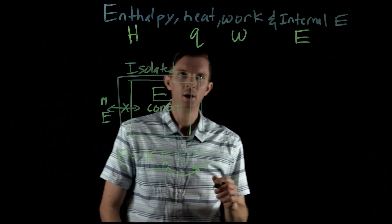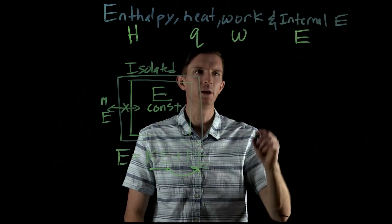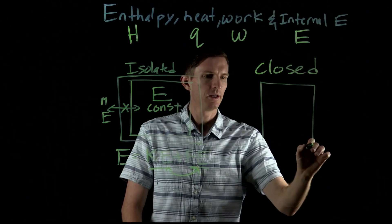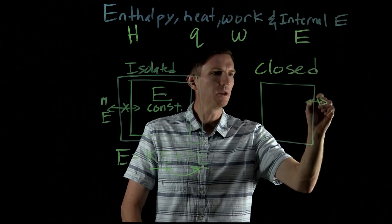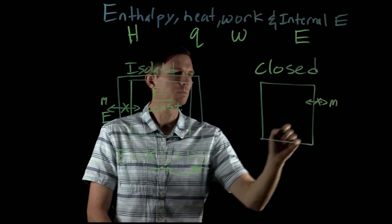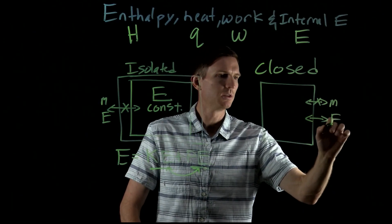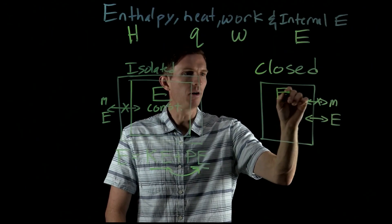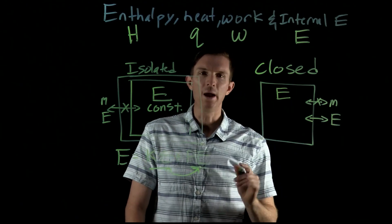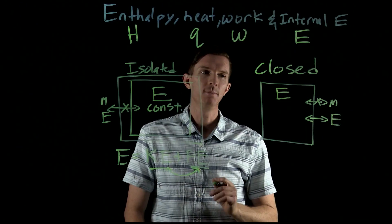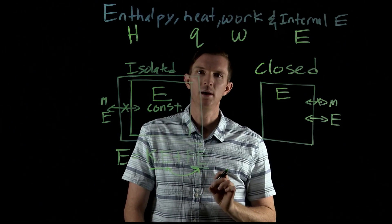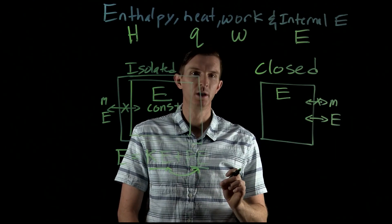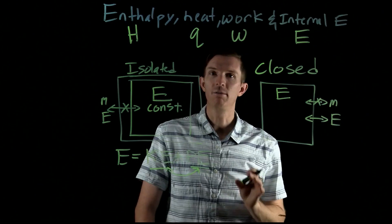Now let's bring that to a system we may use more frequently, and that is a closed system. It's sealed, and we can't let matter or mass go across, but we do have the ability to allow energy to go in and out. Inside of our system we have a specific internal energy that includes kinetic and potential energy, but this is not constant because we could absorb or release energy, which would change our internal energy. With our closed system, we now have the ability to have our internal energy change.